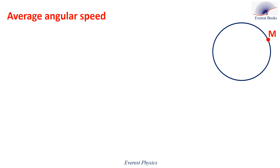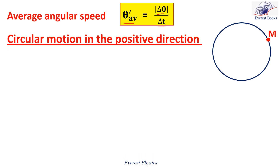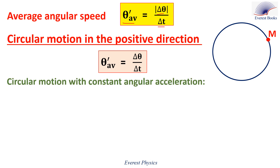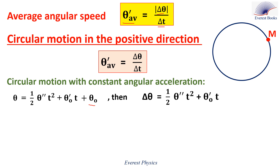The average angular speed, denoted θ'_avg, equals the absolute value of Δθ — the angular displacement — divided by the time taken. This equation can be used for any circular motion, whether accelerated, decelerated, or uniform. For circular motion in the positive direction, Δθ is positive, so the average angular speed equals Δθ/Δt. Now focusing on circular motion with constant angular acceleration, take the second equation and move θ₀ to the left side to get Δθ = ½θ''·t² + θ'₀·t.